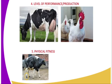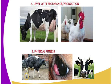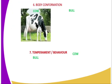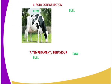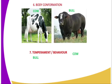Fifth is physical fitness. The animal selected should not be limping, nor should it be blind in one eye, as this can be a genetic disorder that may be transmitted to future generations. Sixth is body conformation. For example, a dairy cow should be wedge-shaped or triangular in shape, while a beef animal such as a bull should be blocky in shape, as illustrated in the diagram.